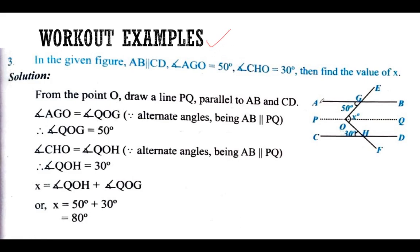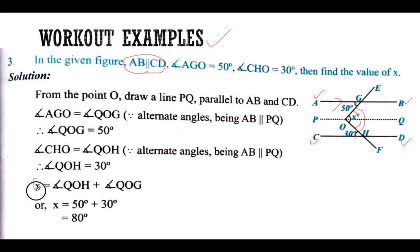Now we come to the first workout example. Lines a, b, and c, d are parallel lines — it's given in the question. The angle 50 equals x by alternate angle, and the angle 30 is also an alternate angle. When you add these two angles, that will equal x.